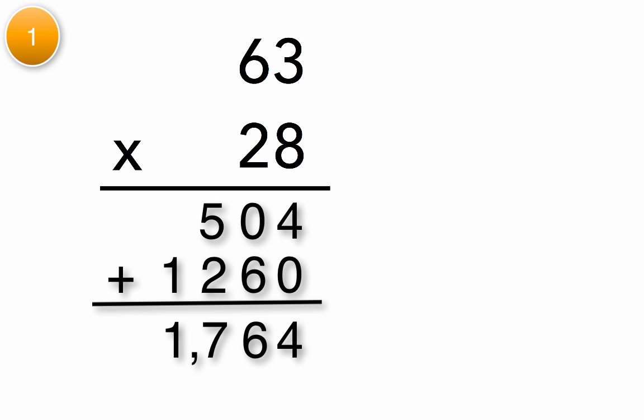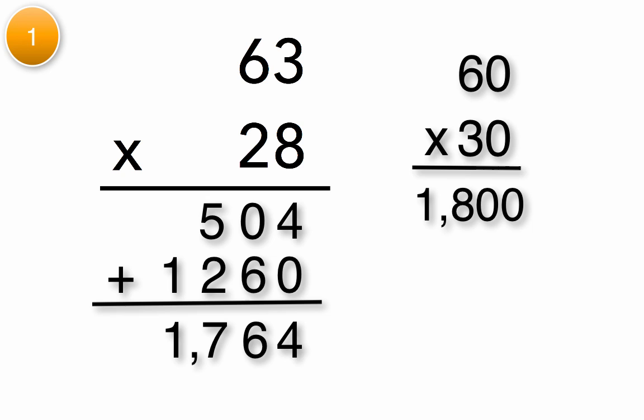Let's use rounding to check if our answer is reasonable. 63 rounds down to 60. 28 rounds up to 30. 60 times 30 is 1,800. Is 1,800 close to 1,764? Yes! Your answer is most likely correct.